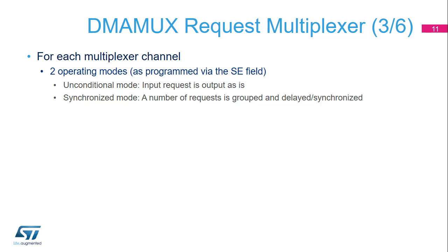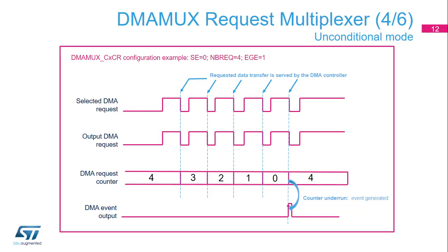For each multiplexer channel, there are two operating modes programmed via the SE field. In unconditional mode (SE=0), the input request is output as-is and the DMA request is transmitted immediately. When the DMA controller has served a data transfer, the DMA request is deasserted and the built-in request counter is decremented. At counter underrun, an event can be generated if enabled via the EGE field. In synchronized mode, a number of requests is grouped, delayed, and synchronized.